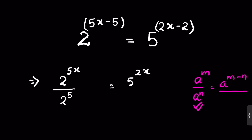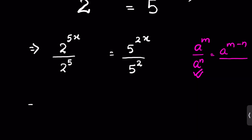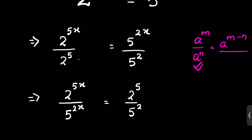Now let's send the variables to one side. This will be 2 raised to the power 5x upon 5 raised to the power 2x, equal to 2 raised to the power 5 upon 5 raised to the power 2. We move the 5 raised to the power 2x to the left-hand side — since it was in the denominator, it becomes the numerator.